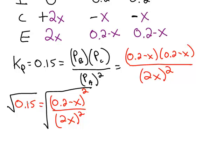So if I do this, square root of 0.15 is 0.3873. The square root of the right-hand side is 0.2 minus X, divided by 2X. If I cross multiply, bring all my X's to one side, all my numbers to the other side, I'll get an answer for X, 0.113.